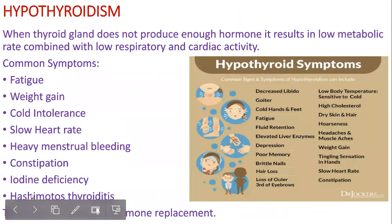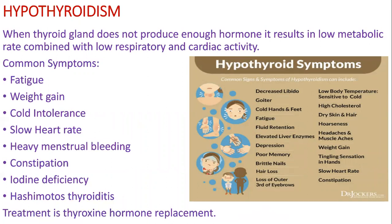Now coming to Hashimoto's thyroiditis. It is an autoimmune disease in which the thyroid gland is destroyed by the body's own immune system — the body treats the thyroid gland as foreign and attacks it. The treatment for hypothyroidism is hormone replacement therapy with thyroxine. We will talk more about hypothyroidism in the next class.